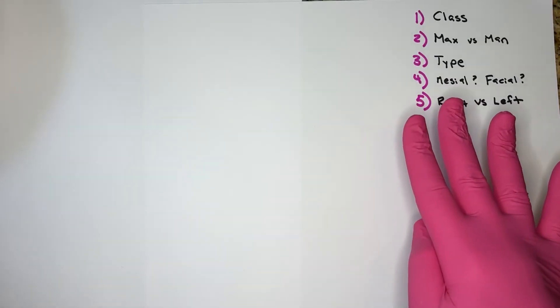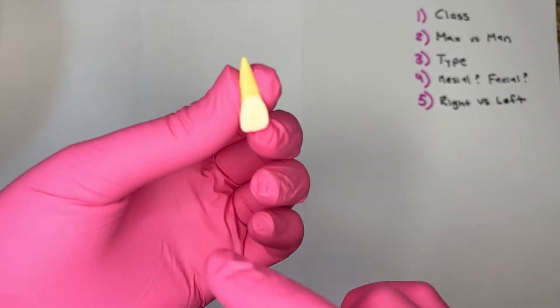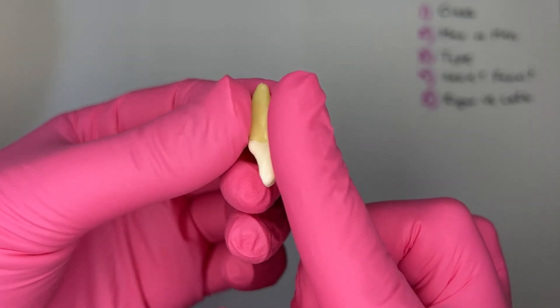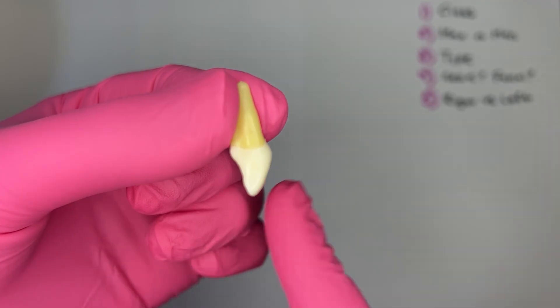Step number four, identify the mesial and the facial of the tooth so you can tell which side is which. I know that this side, it has this convex shape to it, is the facial while the concave is the lingual.